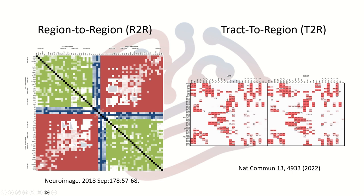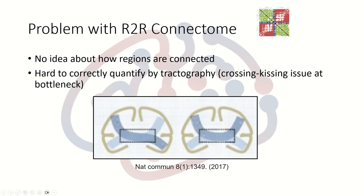So why do we need yet another connectome? There are several reasons why we prefer not to use region-to-region connectome using tractography. First of all, we have no idea how regions are connected. For functional MRI we don't have signal from white matter, but in diffusion MRI we have signals from white matter tracks, and the routes of the tracks are important in forming disease status or informing functions. But the conventional region-to-region connectome has no idea how regions are connected.